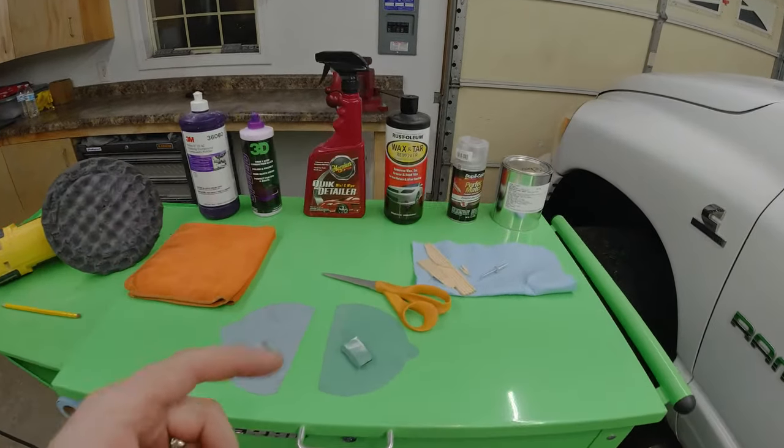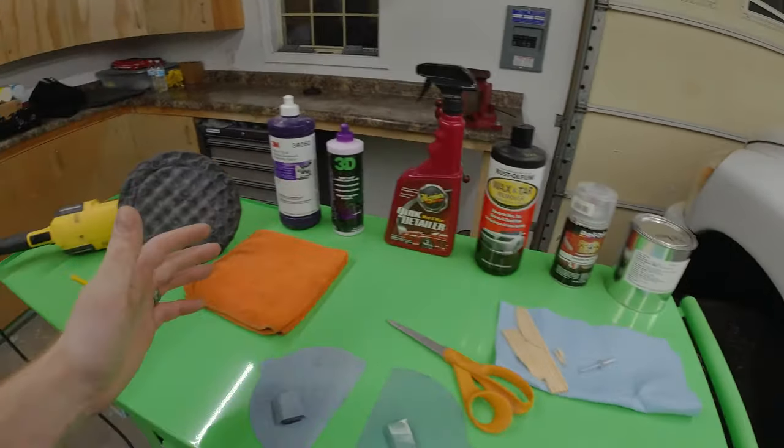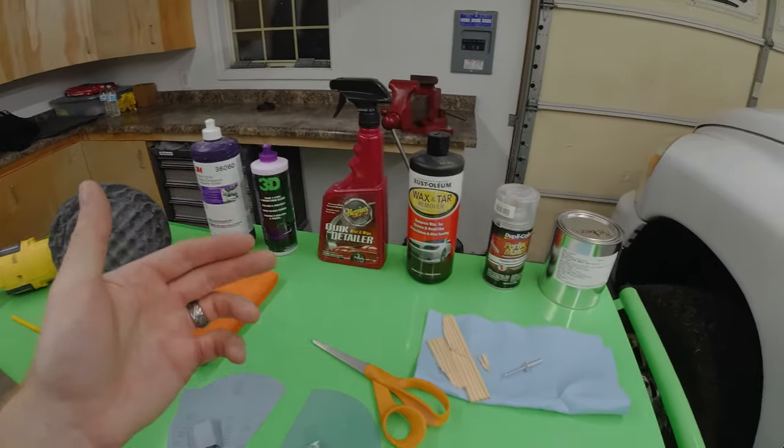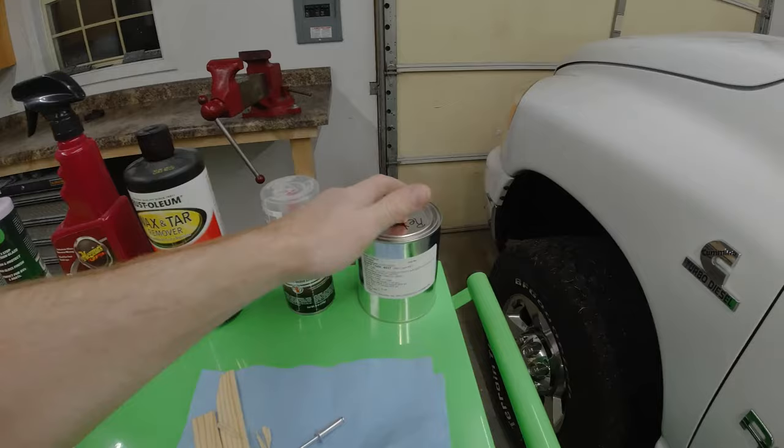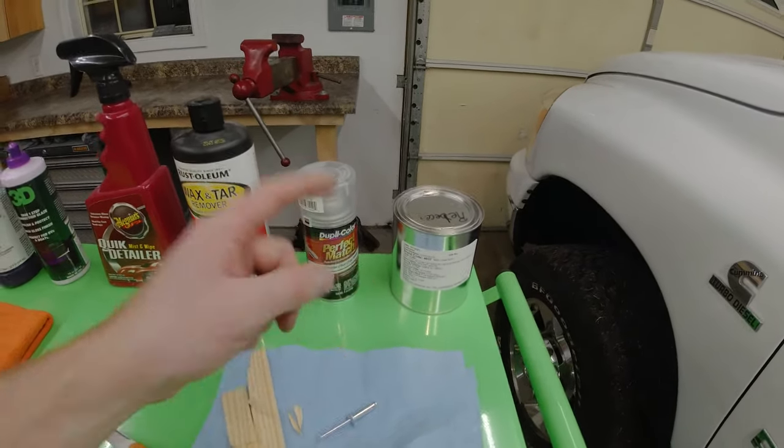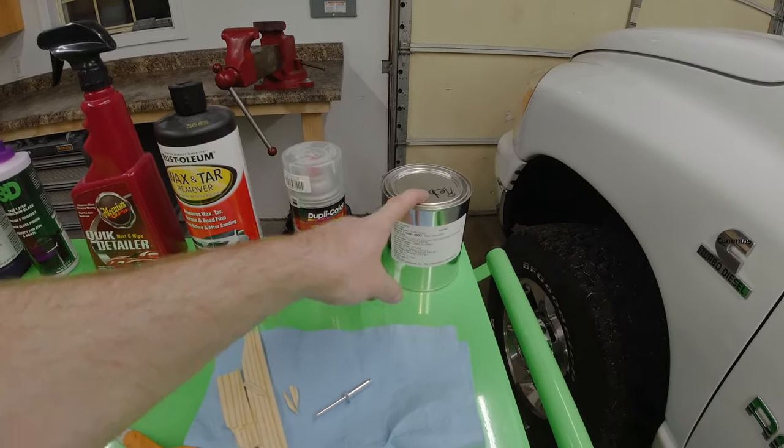Here's everything I'm going to use to properly fix this paint chip. You can get all this stuff at your local auto parts store. I've got one quart of PW7 automotive paint. You can also use a paint pen, which are more readily available at auto parts stores than a quart of paint.